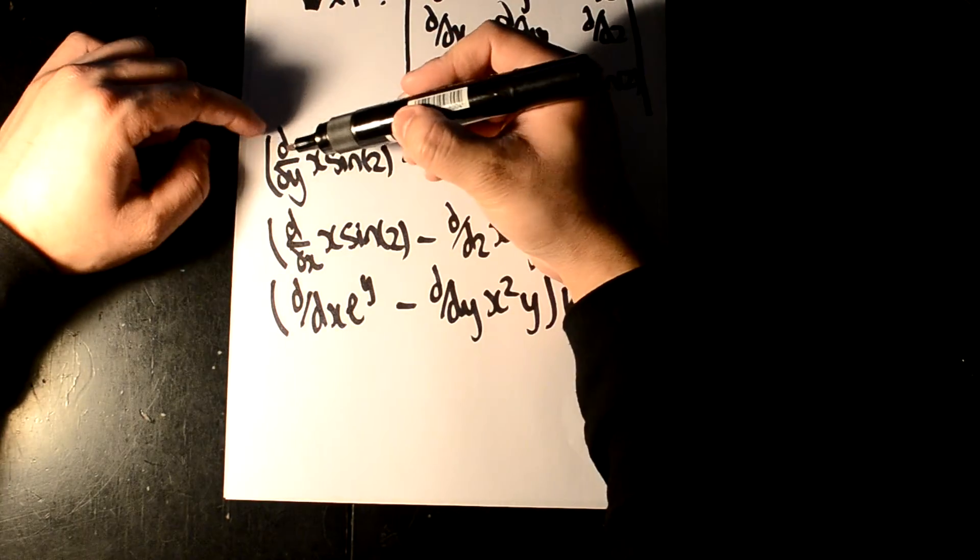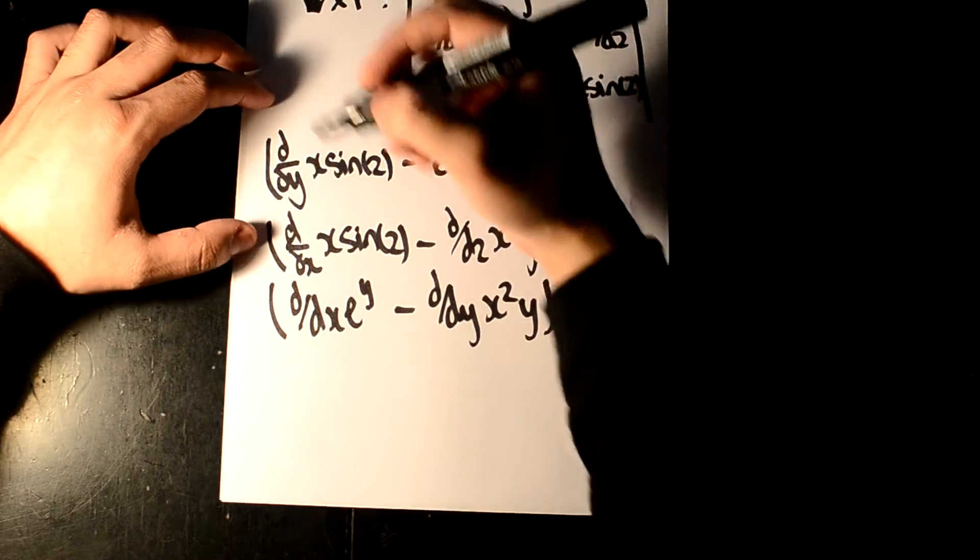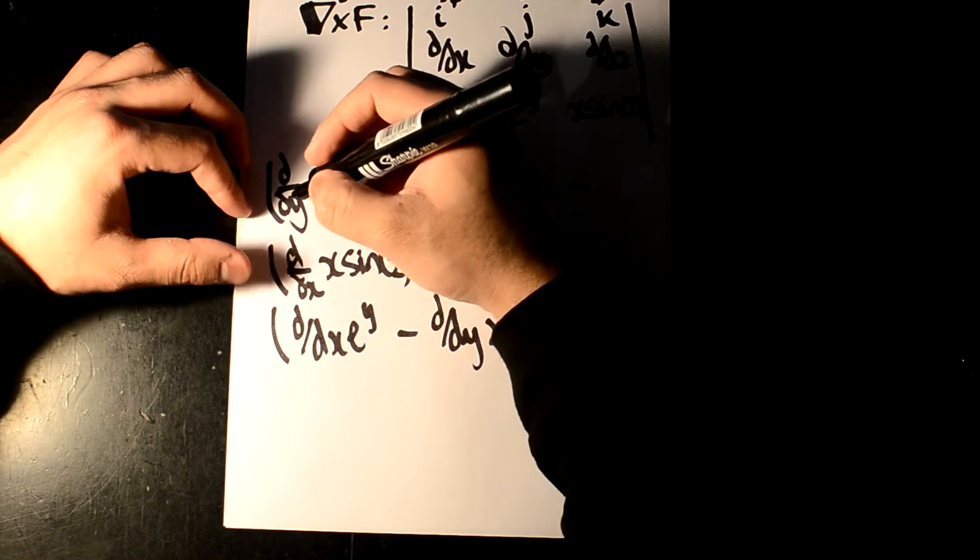And then, as you can see, we've got d over dy, d over dz, d dx, dz, and so on. What that means is you're going to differentiate what is next to it with respect to whatever it is in terms of.